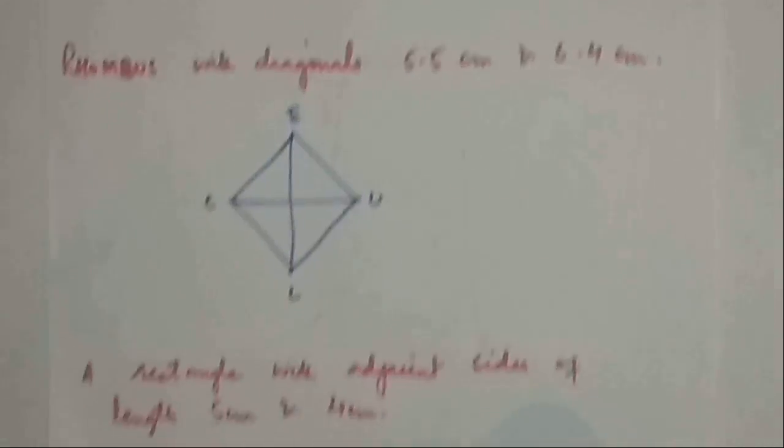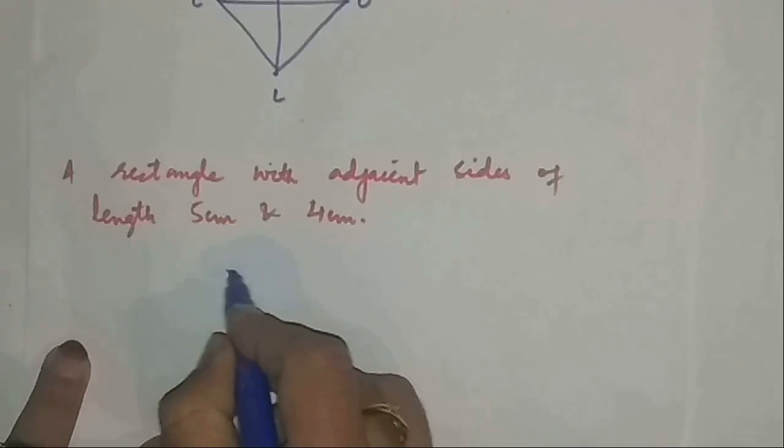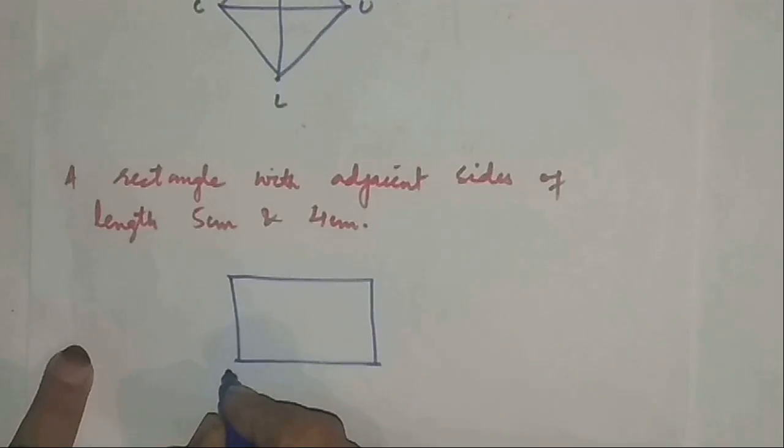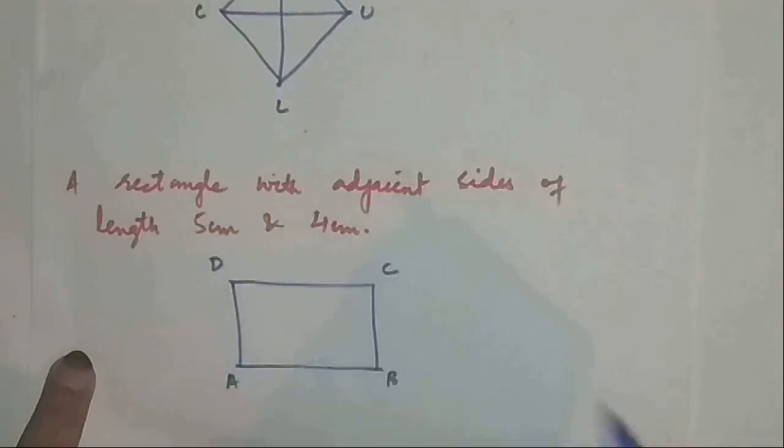In the third part, you are supposed to make a rectangle with adjacent sides of length 5 and 4. So what do we mean by adjacent? Let us name it as ABCD. Every figure is incomplete if it is not named.